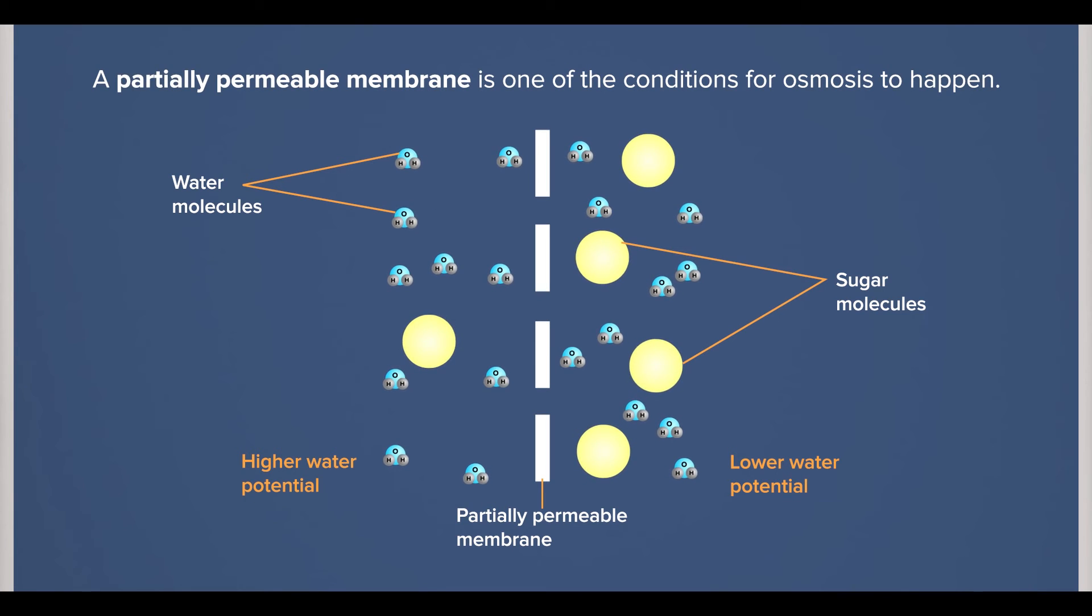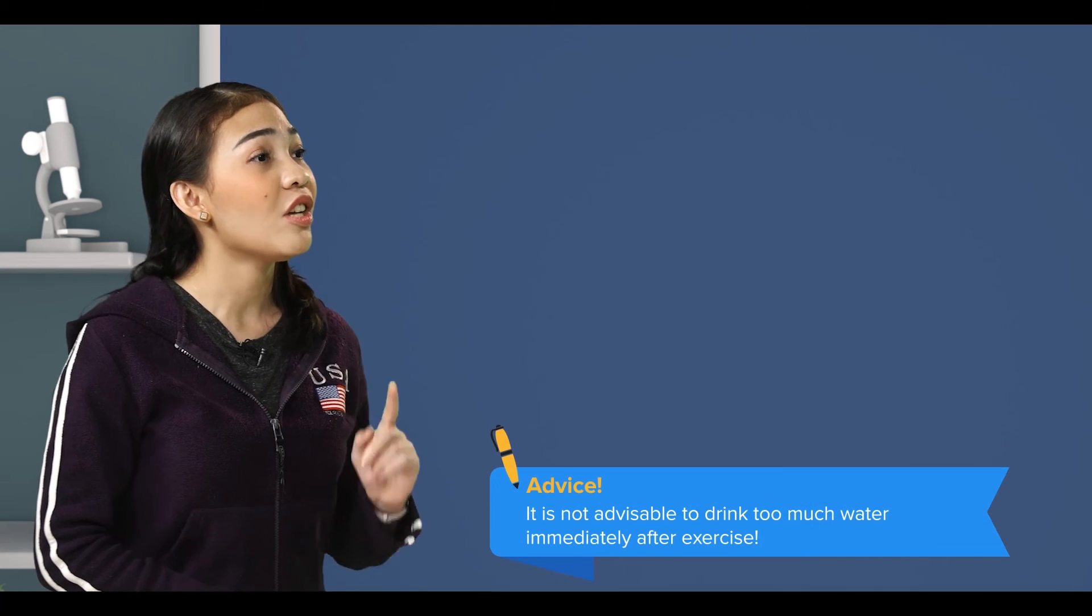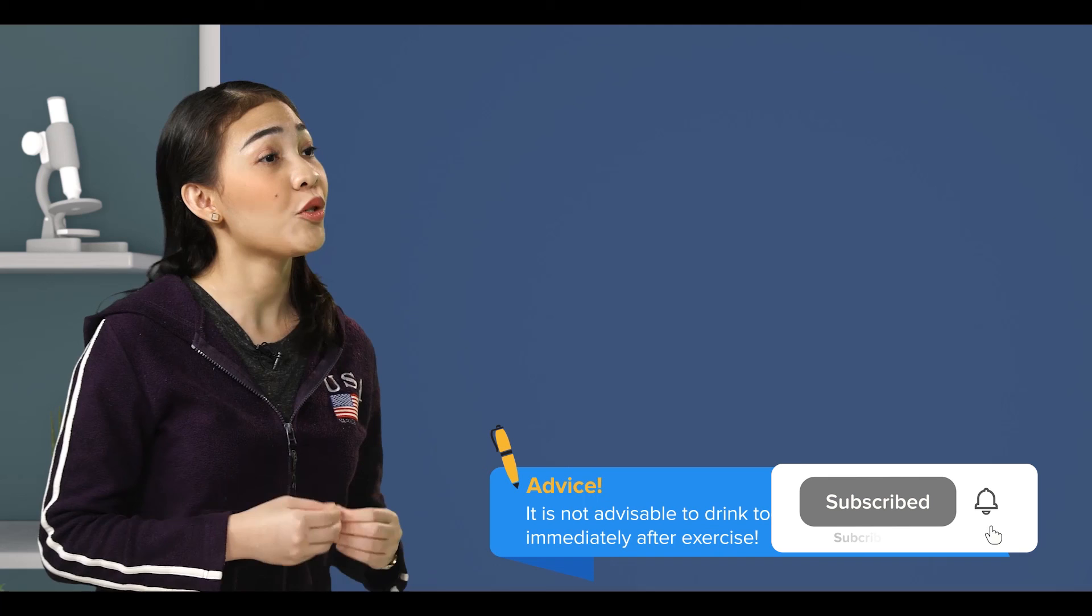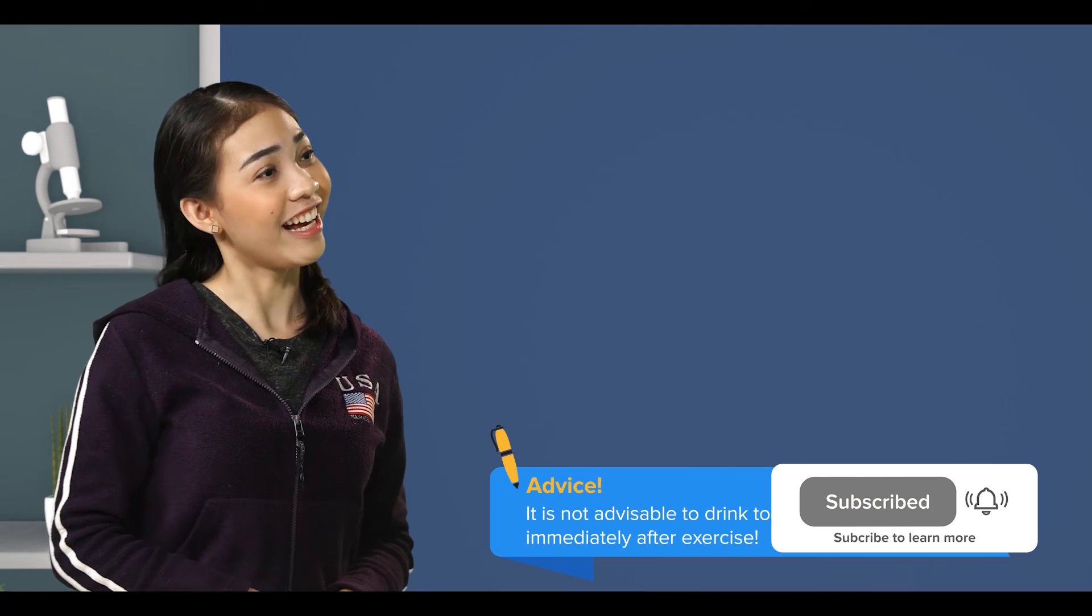And also take note that the partially permeable membrane is one of the conditions for osmosis to happen. I see. Now I understand. That's why it is not advisable to drink too much water immediately after exercise. That's right.